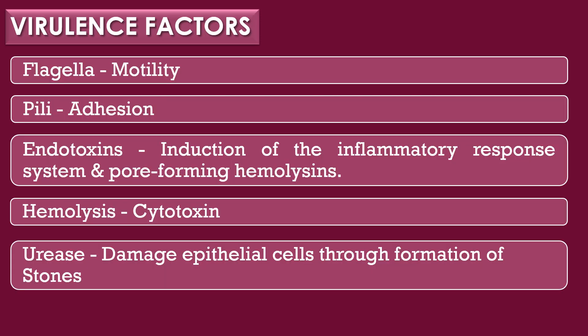Virulence factors of Proteus mirabilis: The ability of a microorganism to cause disease is called virulence, and the term virulence was first coined by the scientist Louis Pasteur. The virulence factors are the factors responsible for causing infection in human beings. Proteus mirabilis has five major virulence factors: flagella, pili, endotoxins, hemolysins, and urease.